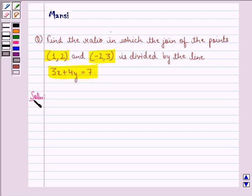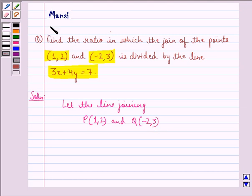So let us see the solution to this question. Let the line joining the points P that is (1,2) and Q (-2,3) be divided at R in ratio k is to 1.